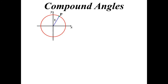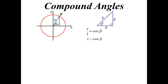We'll start off with our unit circle — radius 1 on our axis. I'm going to label a point P and give it some coordinates. The coordinates will be with reference to the angle that it makes with the positive x-axis. A little bit of trig: the x-value will end up being cos beta, and the y-value will end up being sine beta. So our coordinates are (cos β, sin β).